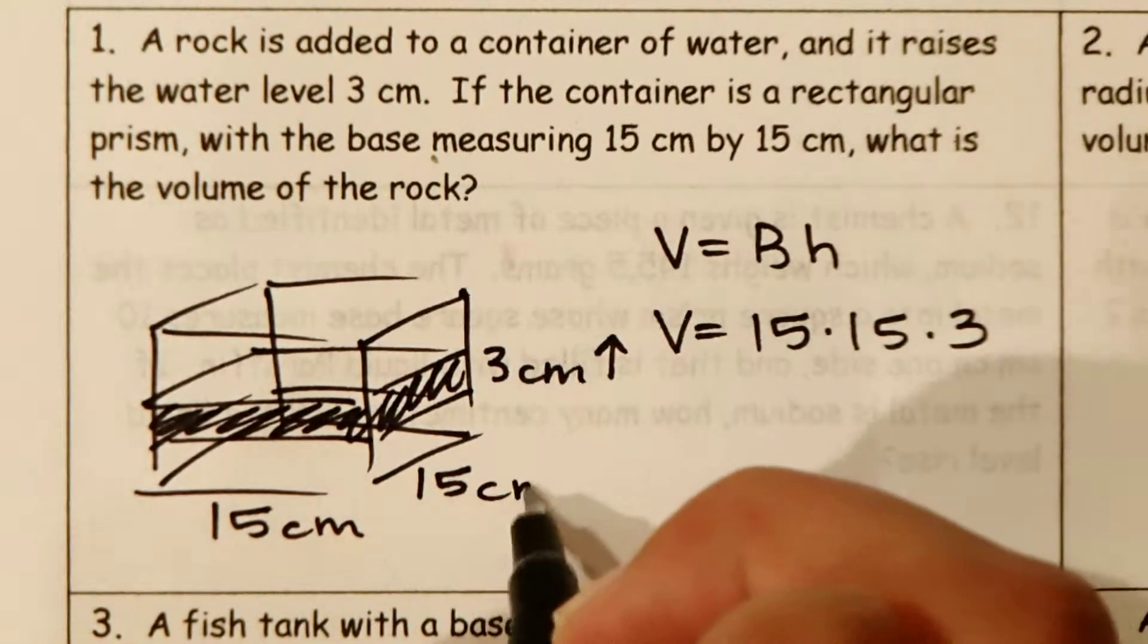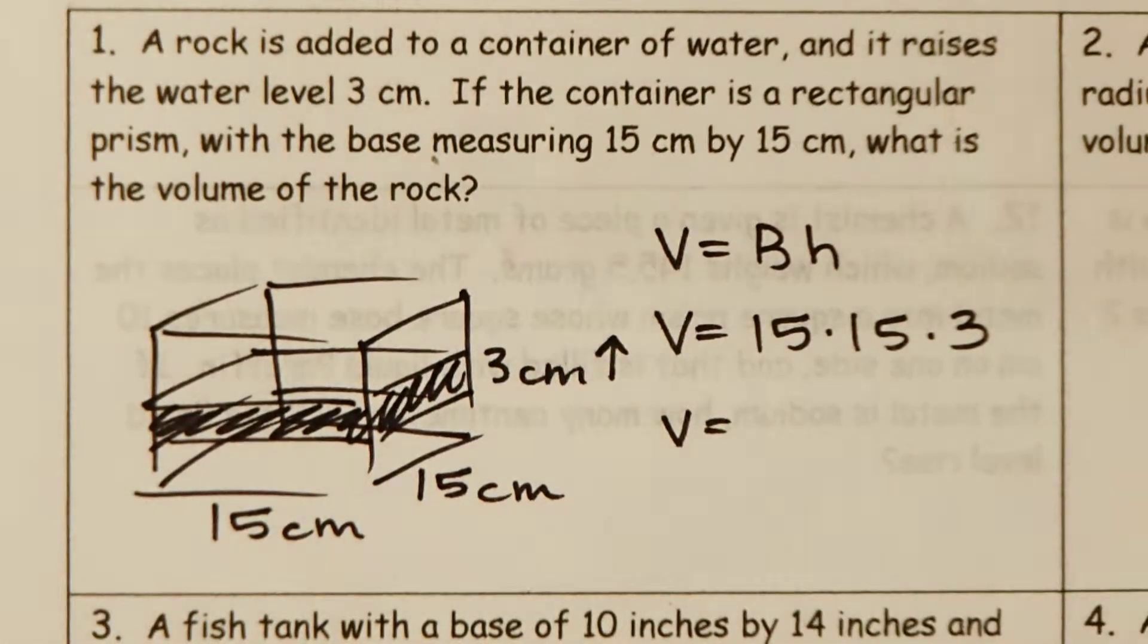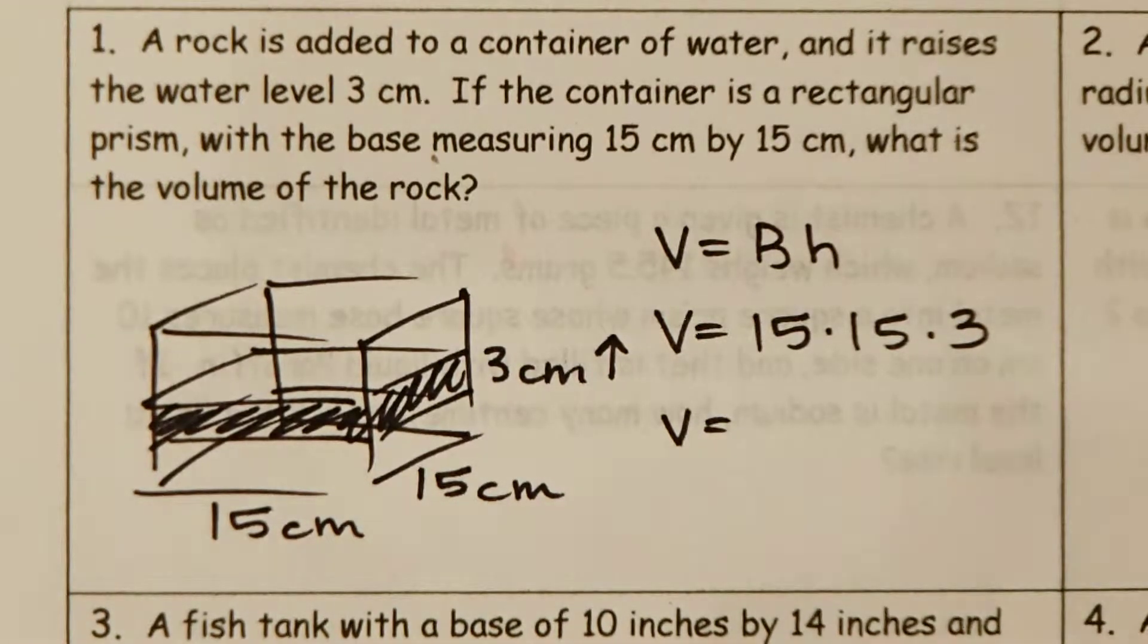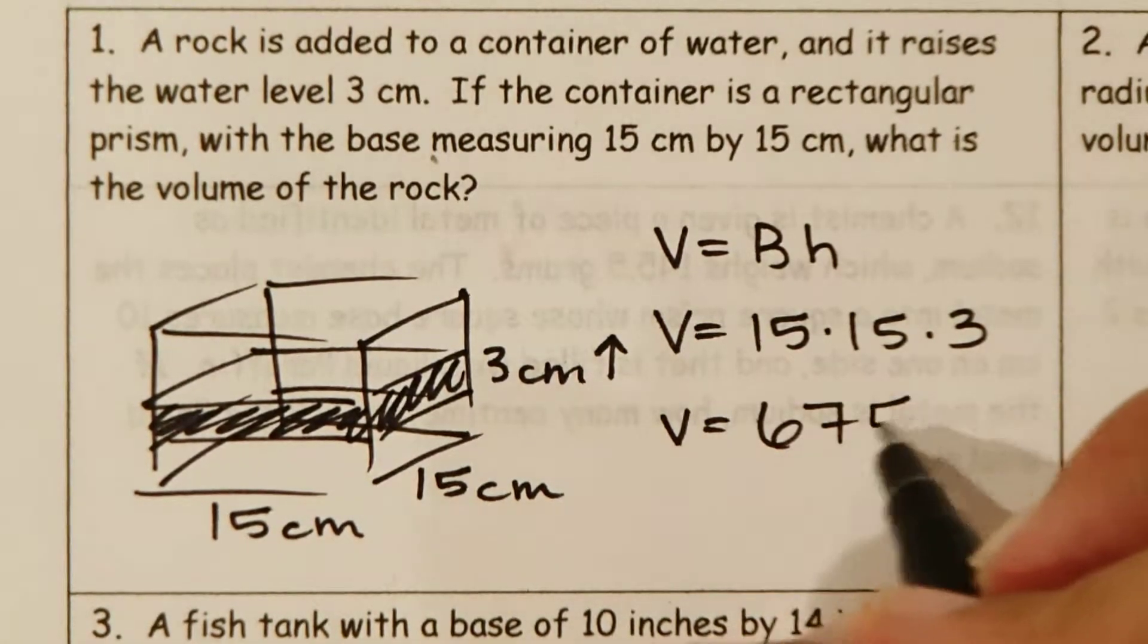These are all in centimeters. So this volume is going to be, calculate this real quick. This is going to be 675 cm cubed.